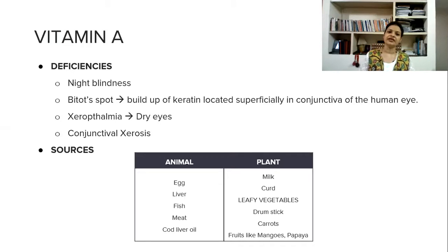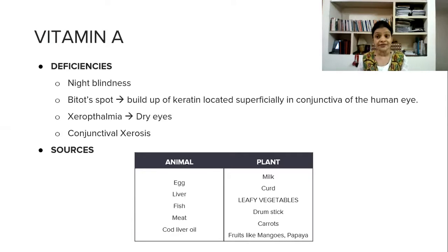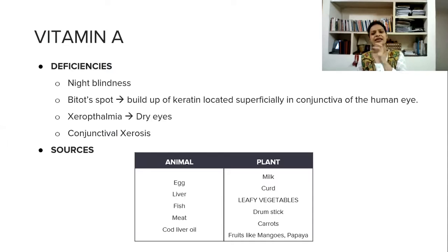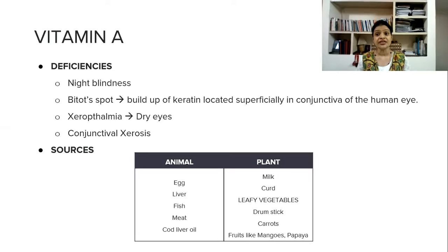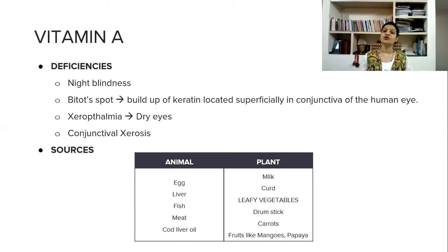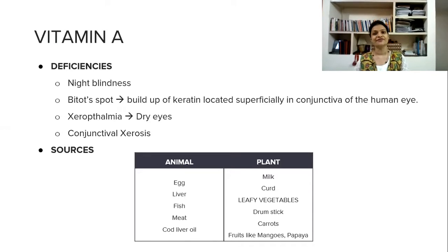Sources of vitamin A: from animal sources we get eggs, fish, cod liver oil, and meat. From plant sources, mainly carrots, drumstick leaves, leafy vegetables, milk, and yellow fruits — especially mangoes and papaya — provide vitamin A.